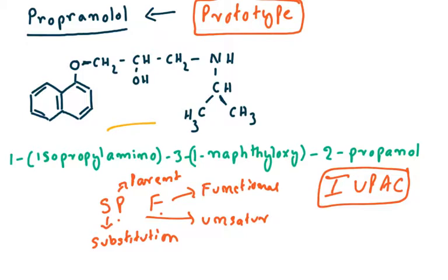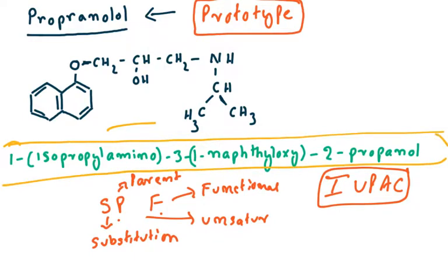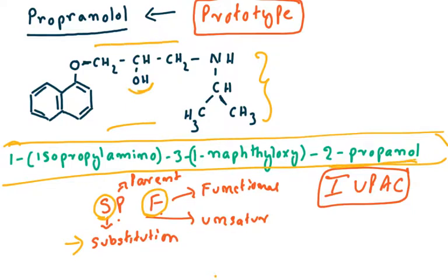For propranolol's IUPAC name: the first part is isopropylamine — isopropyl group plus amine — which is the substitution. The OH-containing propanol group is the functional group, as the OH will react with other molecules. Among hydrocarbon groups, an aromatic ring has higher priority and becomes the parent molecule.